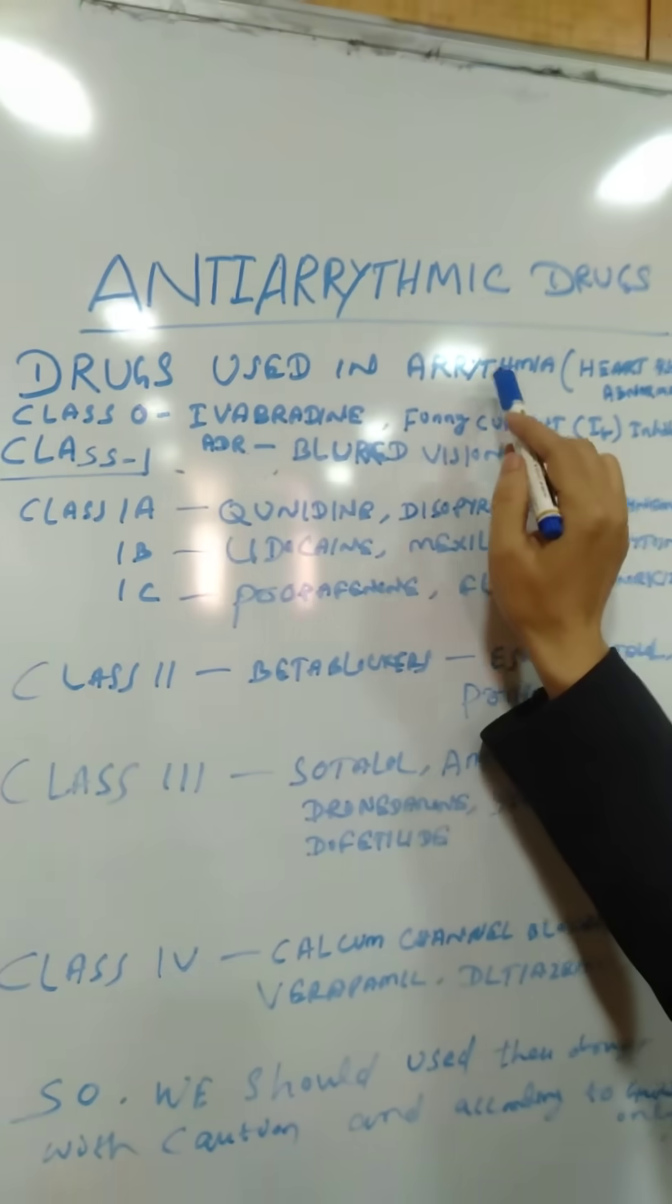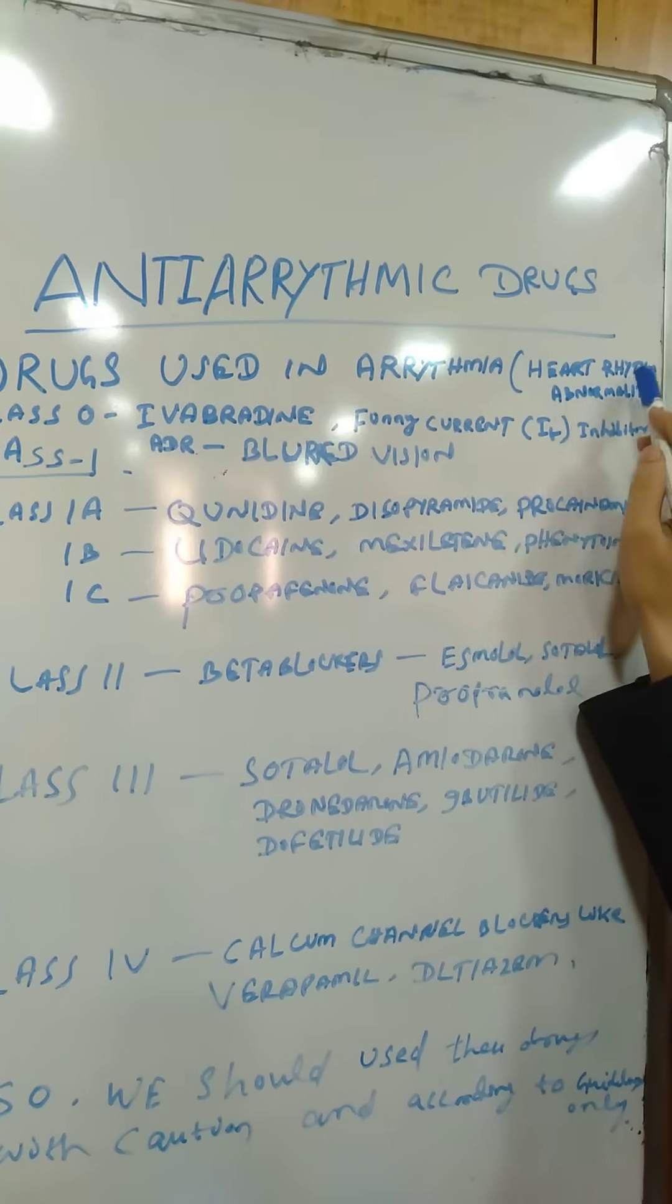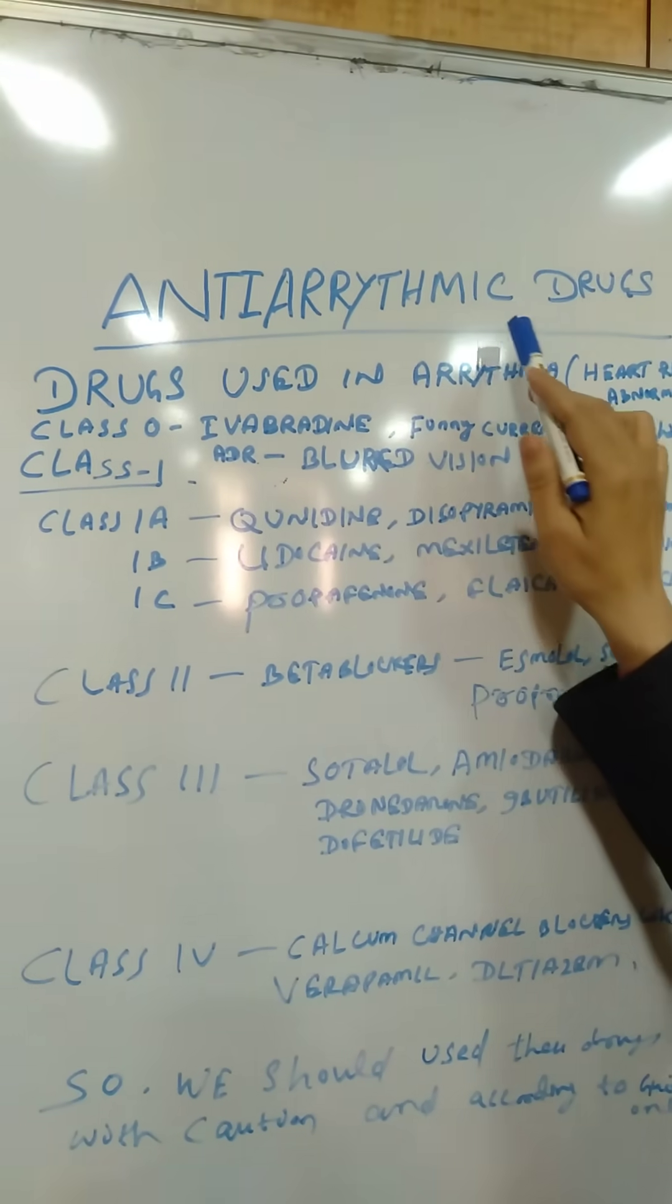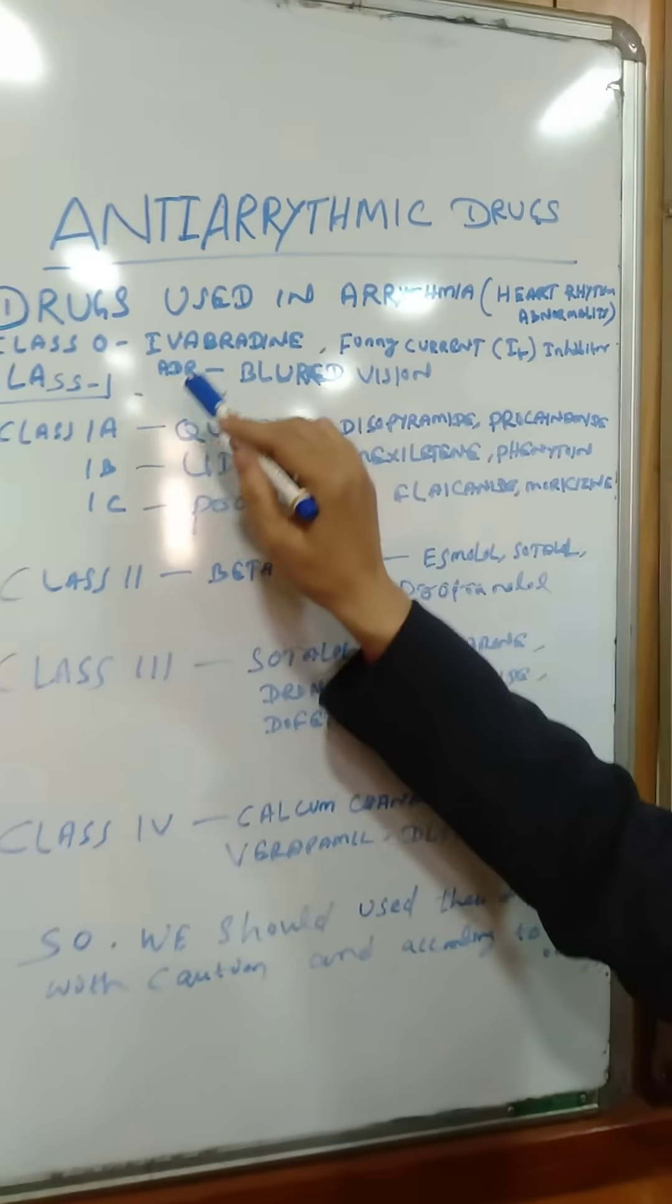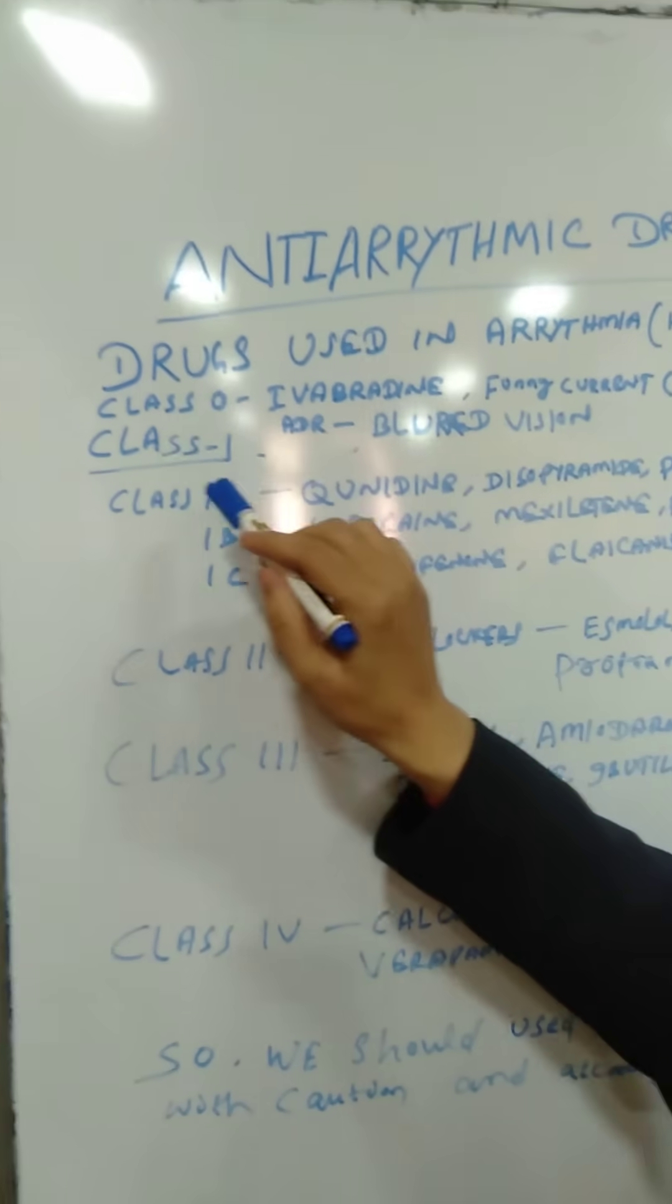Drugs used in arrhythmia, that is heart rate rhythm abnormality, are antiarrhythmic drugs, and generally there are so many classes of drugs.